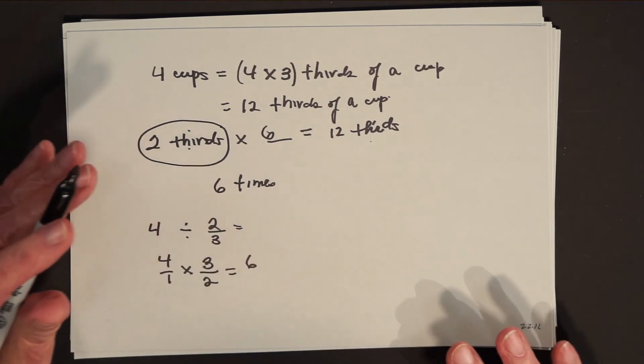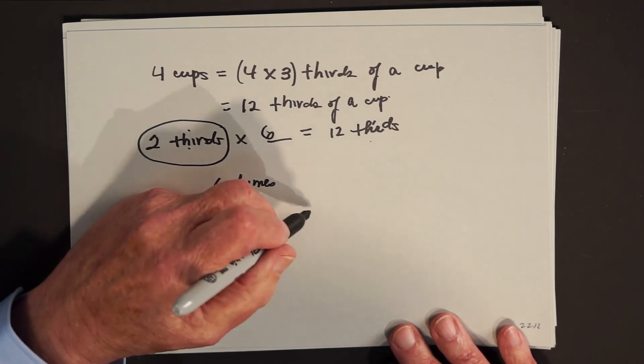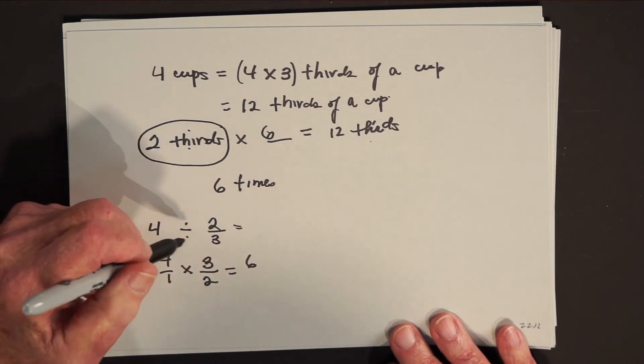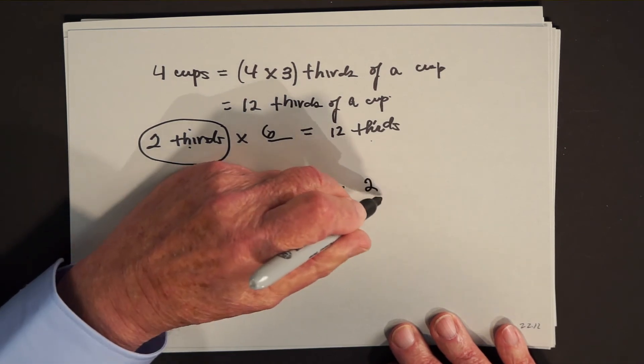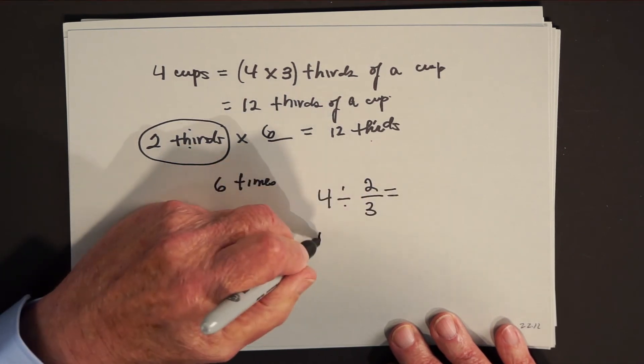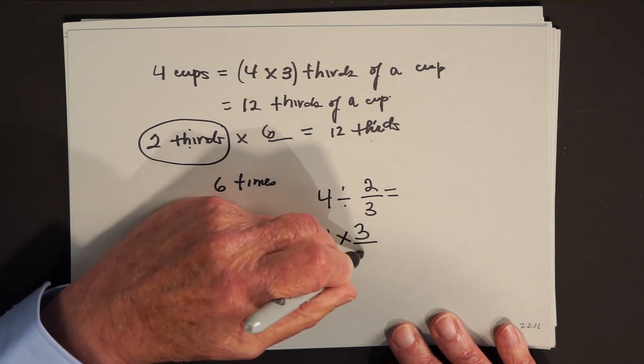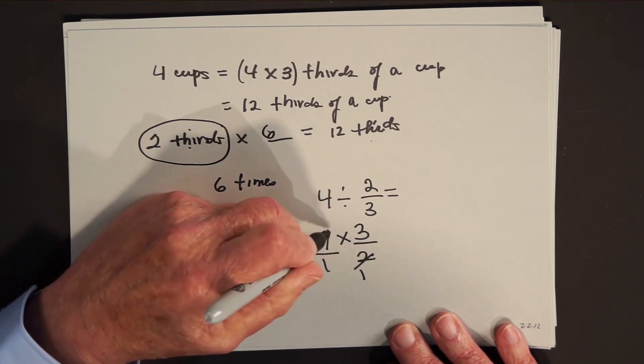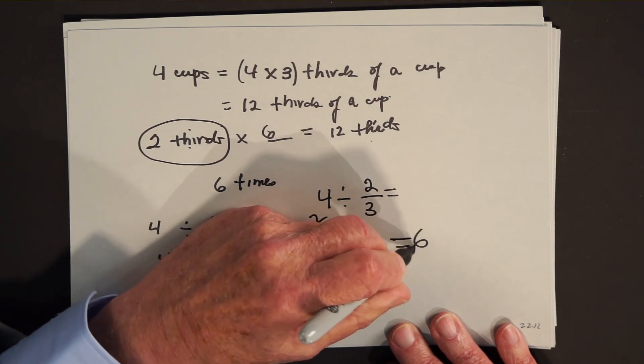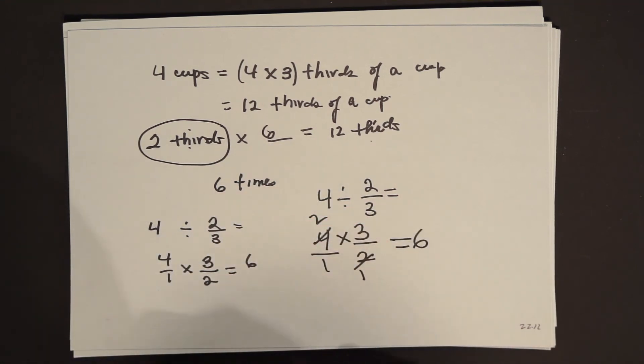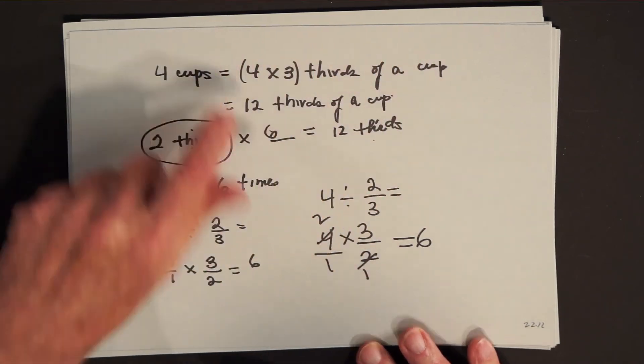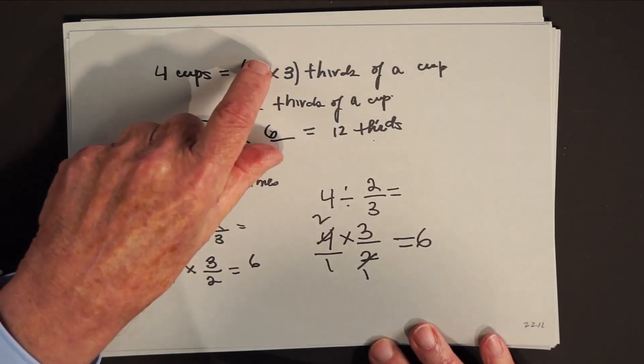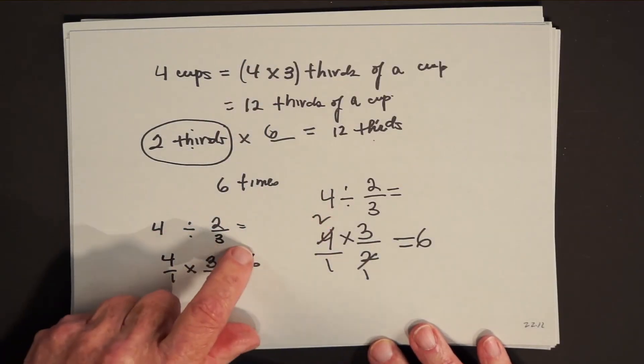And again, if we just wanted to do this problem mechanically, you'd say, well, how many times does a two third cup measuring cup go into four cups? And you'd say, I'll just take four and divide it by two thirds. Then I'll invert and multiply. And I get the same answer. Now, doing it this way is probably much quicker than thinking of it this way, but what I'm trying to have you see is that by doing it this way first, this way becomes more natural.